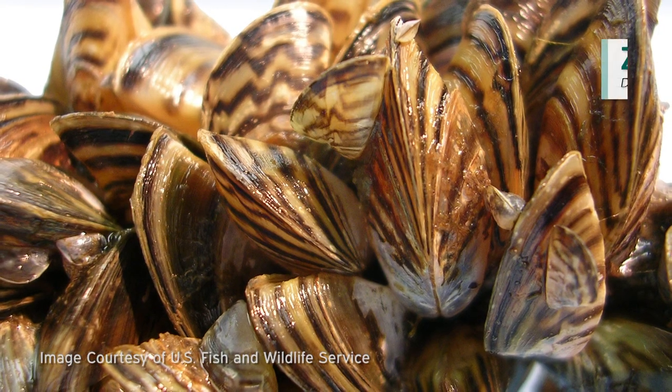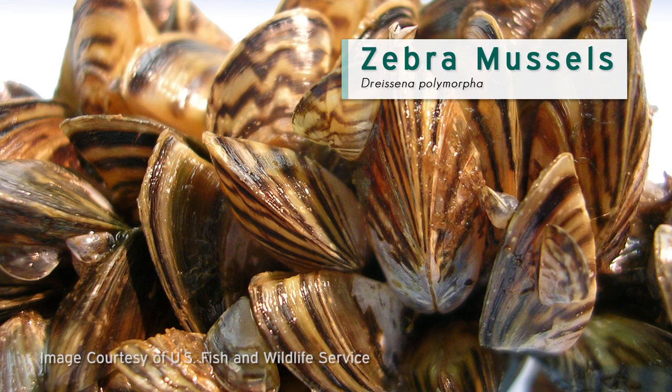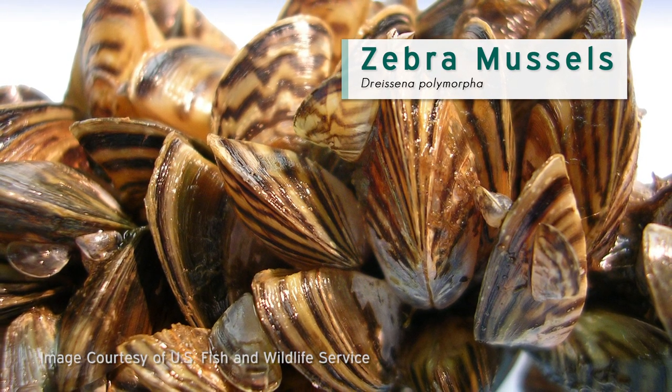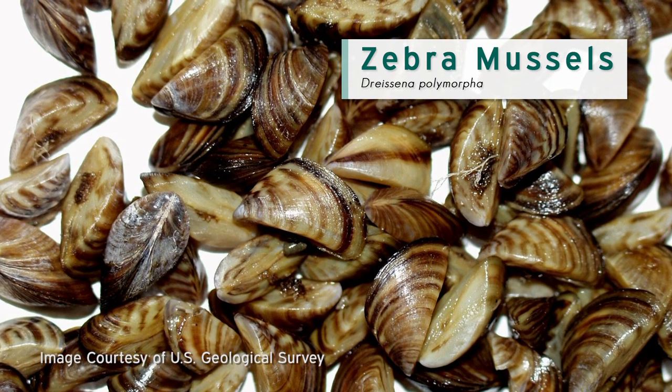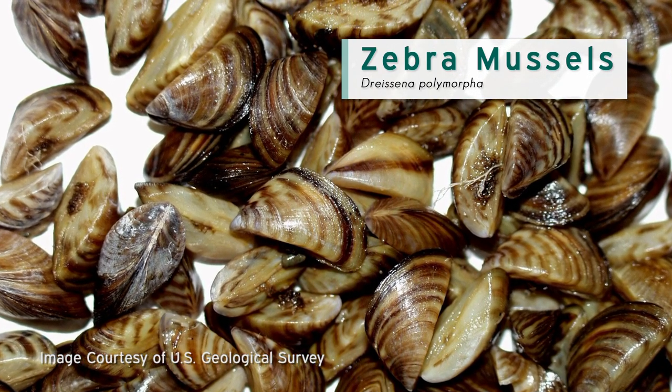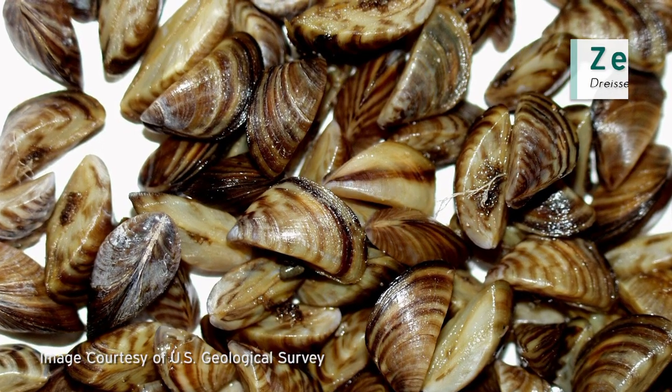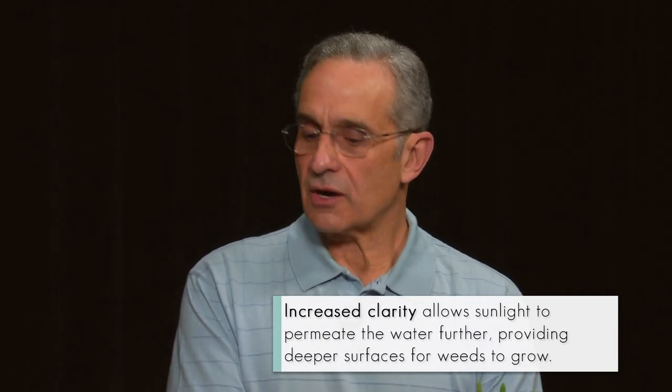Fred mentioned the zebra mussels and water clarity. The zebra mussels have created a vicious cycle. They take in various nutrients, which include plankton, very small animals, and small unicellular plant species. In doing so, they remove the particles in the lakes that decrease clarity. The zebra mussels have made lakes very, very clear, and any depth that can receive sunlight can start growing weeds.